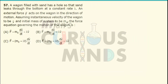A wagon filled with sand has a hole so that the sand leaks at a constant rate of lambda. An external force F acts on the wagon in the direction of motion. Assuming the instantaneous velocity of the wagon to be v vector and initial mass to be m₀, the force equation governing the motion of the wagon will be equal to?